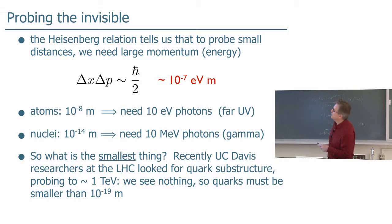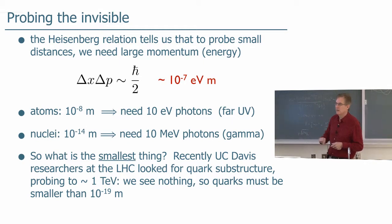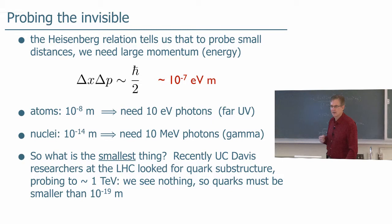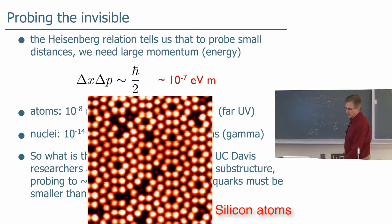So for atoms, if you want to see atoms which are around 10 to the minus 8th meters, you need something like 10 electron volt photons, the far ultraviolet or greater. We can actually see atoms on the surface of a material with electron microscopes. We calculated it here. If you have 100 volt electrons, those have a wavelength of 0.123 nanometers, a tenth the size of an atom. So then you can start to get resolution on your microscope corresponding to the features that you want to see, the bumps of the atoms on the surface.